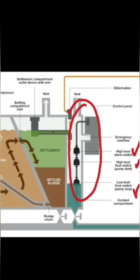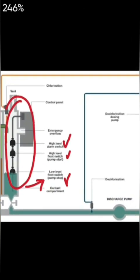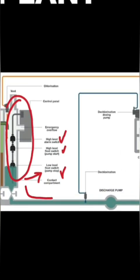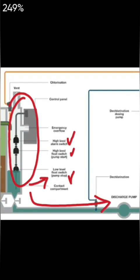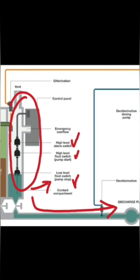The low level is for the stopping of the pump — the discharge pump. The discharge pump is here, as you can see. The discharge pump will start when the high level switch — the center one — gets activated. And when the low level gets activated, the pump will get stopped. If the topmost float is lifted, it will turn into the alarm, which is the high level alarm.